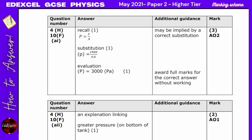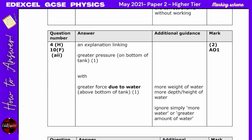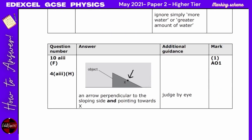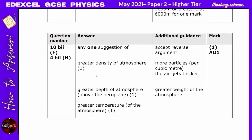For the marking scheme on Question 4: the answer was 3000 pascals. When you add water, there is greater pressure due to the greater force from the water. Draw an arrow perpendicular to the sloping surface, pointing towards X. The change in atmospheric pressure was plus or minus 30 kPa. Greater density of the atmosphere or greater depth of atmosphere explains the higher pressure at lower altitude.